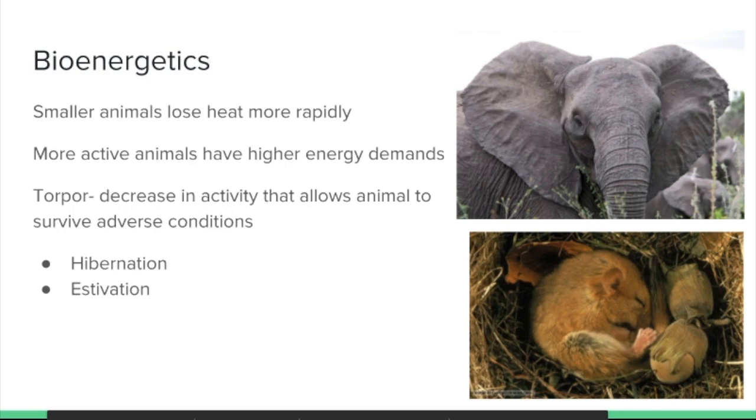Another factor that limits body plan is the amount of energy that an organism needs. Small animals lose their body heat more quickly to the environment. Again, that small body plan is ideal for moving materials in and out efficiently, but you're also going to be losing heat, and so that's a concern for organisms that need to regulate body temperature. Active animals have higher energy demands, which puts limitations on their bodily functions as they're going to need to be able to generate enough ATP to sustain them.